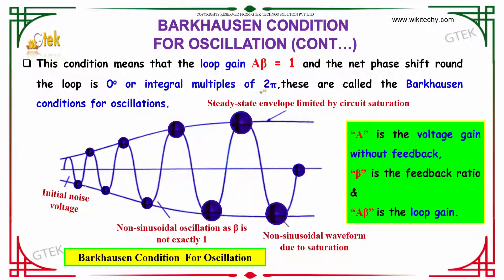This condition means that the loop gain A beta equals 1 and the net phase shift around the loop is 0 degrees or integral multiples of 2 pi. These are called the Barkhausen conditions for oscillations.